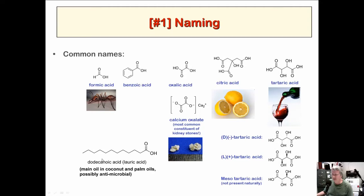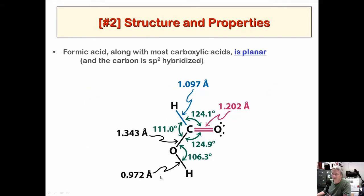There are also super long carboxylic acids, like dodecanoic acid, also called lauric acid. It's found in palm oils and coconut oils and is potentially antimicrobial. Dodecanoic — that's 12 carbons, so C12. Carboxylic acids have a planar SP2-hybridized structure, as shown in formic acid. Bond angles are roughly 120 degrees. The C=O bond length is maybe a little shorter than a normal C=O, and they're basically an SP2-hybridized functional group.